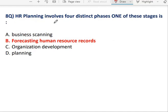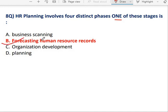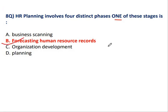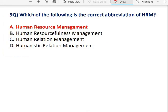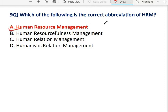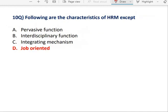Question No. 8: HR Planning involves 4 distinct phases. One of these stages — the first stage — is Forecasting the Human Resource Requirement. Question No. 9: Which of the following is the correct abbreviation of HRM? That is Human Resource Management. Correct Option is A — Human Resource Management.